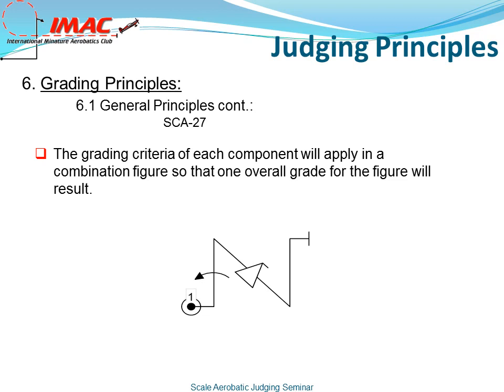Let's take a look at the example below. Imagine the vertical upline — if the track was off 10 degrees, that would result in a one-point deduction. On the 45-degree downline, if he over-rotated by 15 degrees, that would be another one-and-a-half-point deduction. The final upline track again was off by 10 degrees, resulting in a one-point deduction. The total score for this maneuver would be 6.5. This is the total figure score.